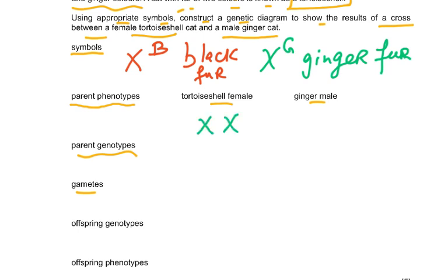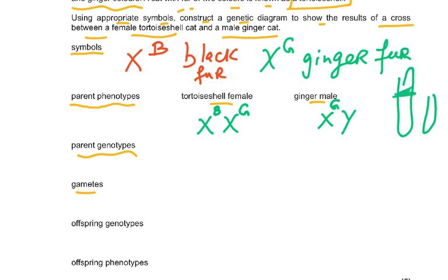The female is XX and the male is XY. The tortoiseshell female must be X^B X^G. The ginger male is X^G Y — there is nothing on the Y chromosome because sex-linked genes are on the part of the X chromosome where there is no corresponding region on the Y chromosome, which is why they are called sex-linked.